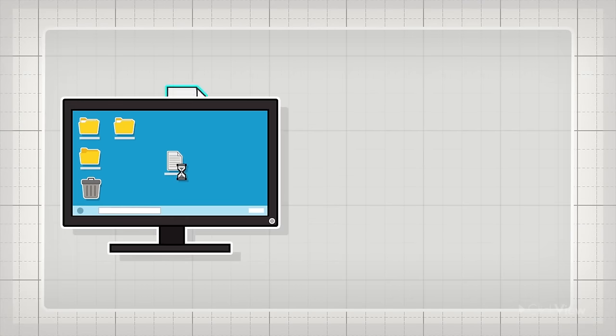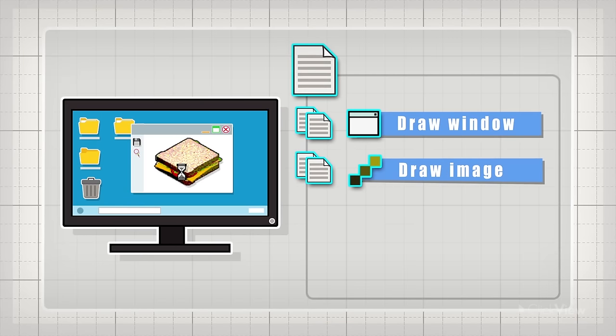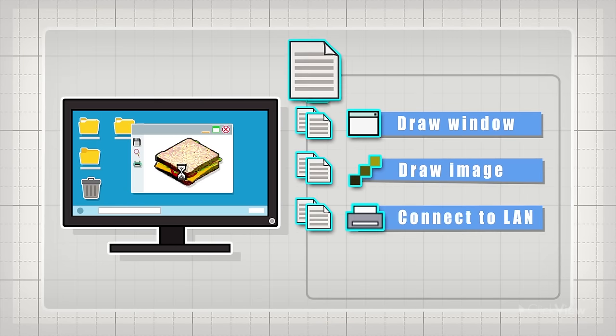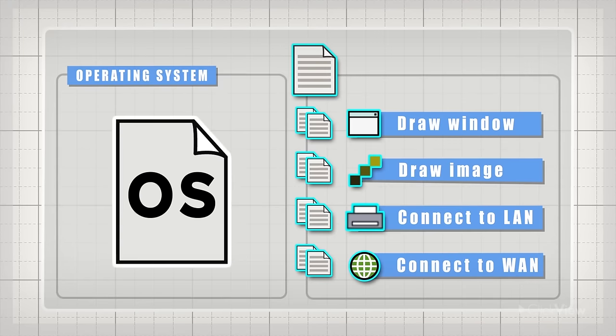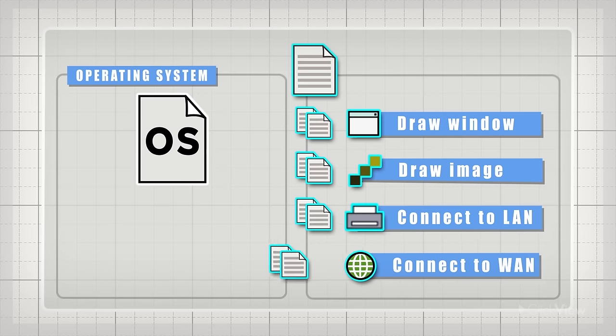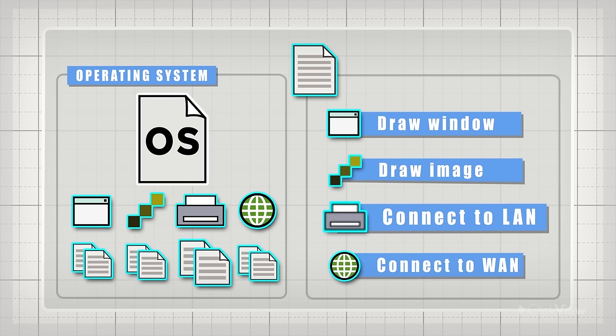The computer issues lines of code as commands to prepare all the important elements, like the screen and the network. The operating system holds the collection of all the common commands and segments them, rather like putting them into a library, from which the other regular programs can borrow codes.